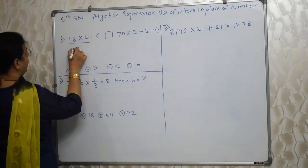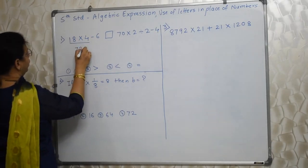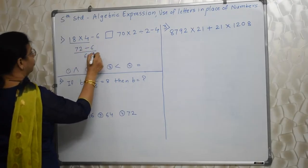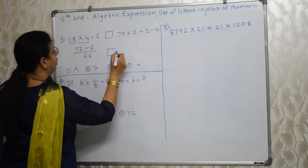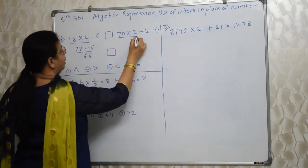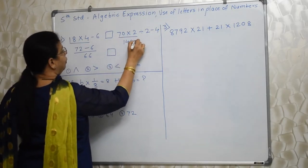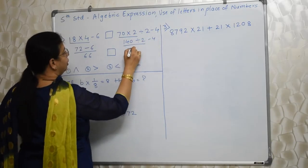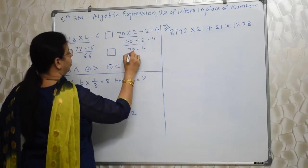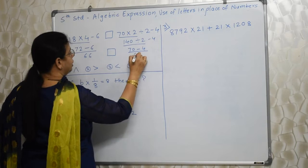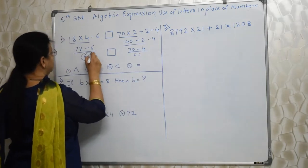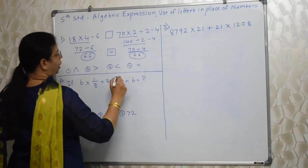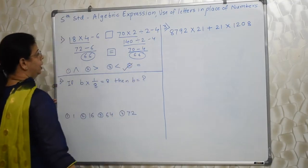First we will do this: 18 into 4 is 72, then minus 6, that is 66. Now for the other expression, this multiplication we will do first — 140 divided by 2 minus 4. So 70 minus 4, that is 66. Here also 66 and here also 66, so obviously the answer is equal to. The fourth option is the correct option.